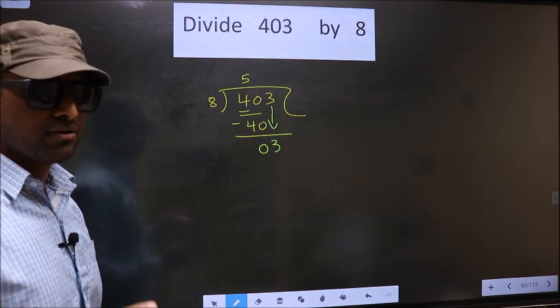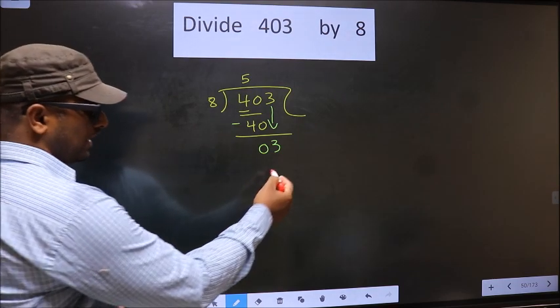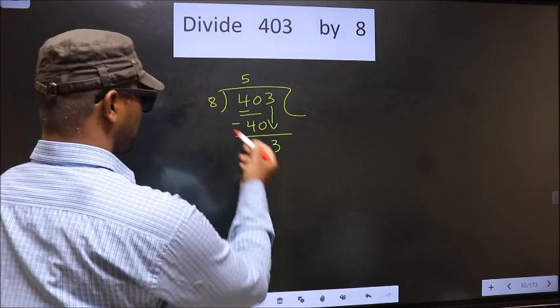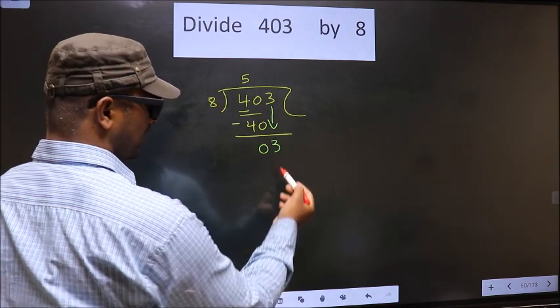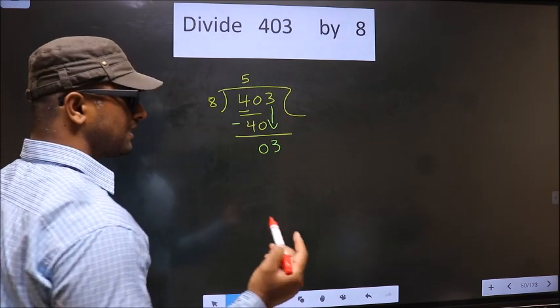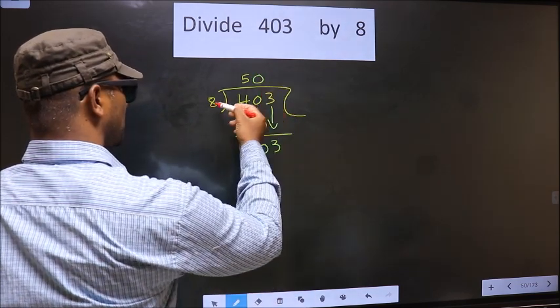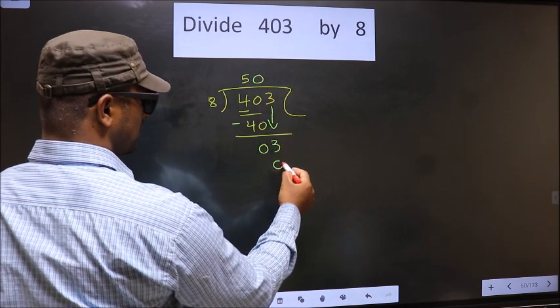Instead, what you should think of is what number should we write here. If we write 8 here, that is larger than 3, so what we do is we take 0 here. So 8 into 0 is 0.